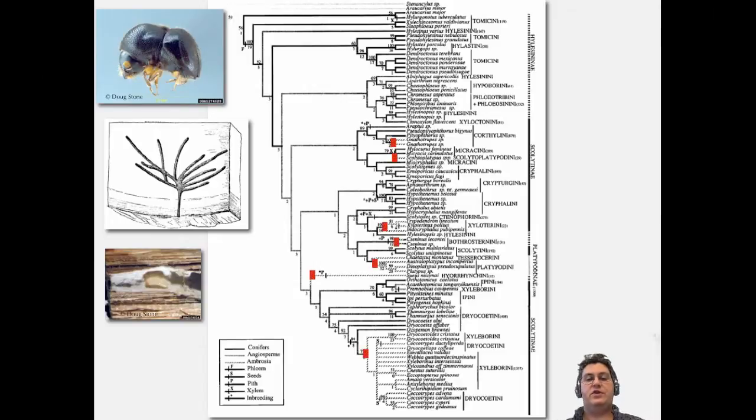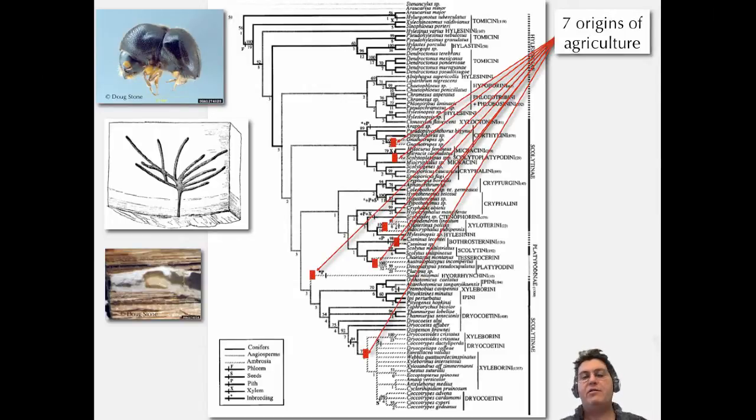You can map traits on this tree, so here agriculture's mapped on, this evolved strategy where the females have these little pockets to bring fungal hyphae to new trees and things like that, so it's a very co-evolved process. How many times did that evolve? According to this phylogeny, it's evolved seven times.